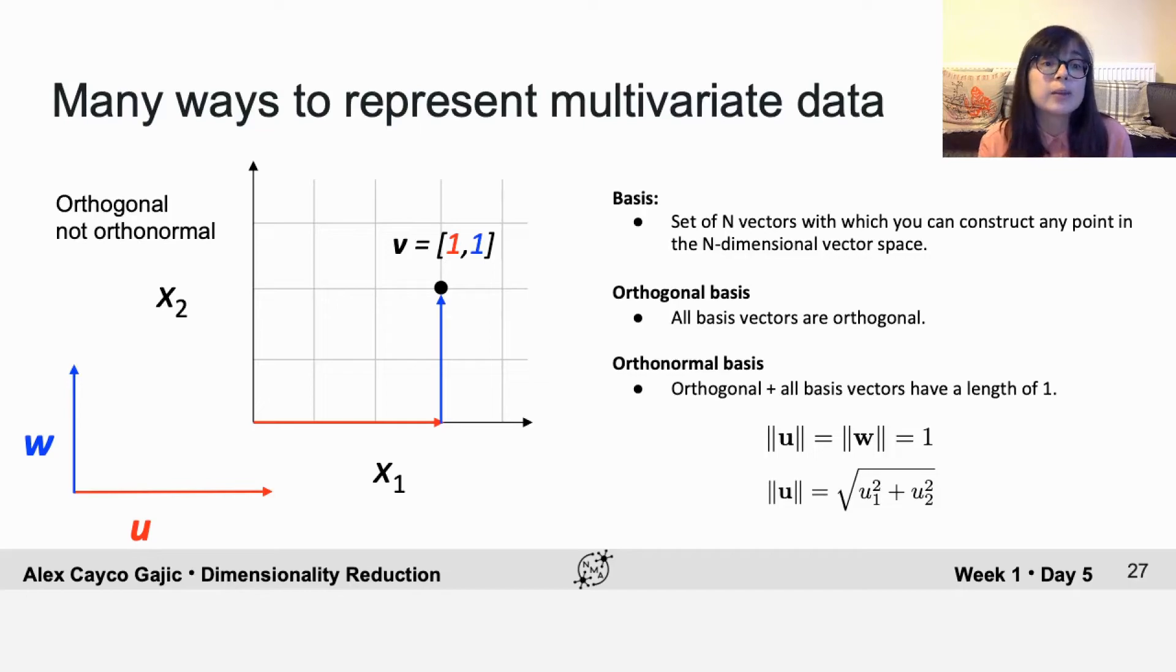This is an example where the basis vectors are orthogonal, but it's not an orthonormal basis. By orthonormal, we mean that the basis is orthogonal and all basis vectors have a length of 1.